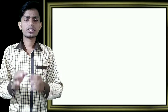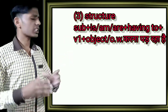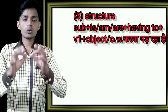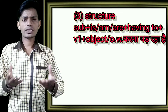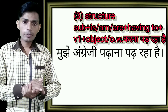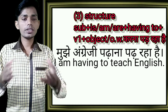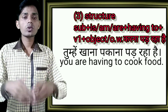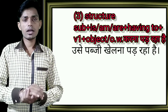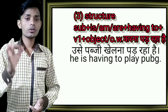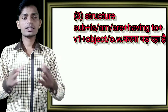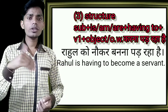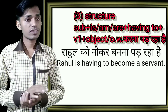Our next spoken English structure is used when someone is learning something or has to do something. For example: I am having to teach English. You are having to cook food. He is having to play PUBG. Rahul is having to become a servant. Such sentences are made using this structure.